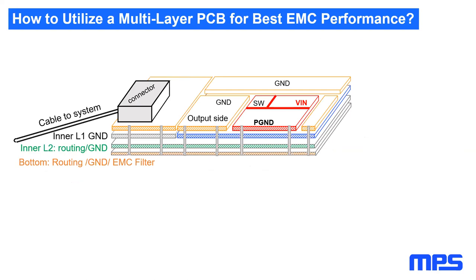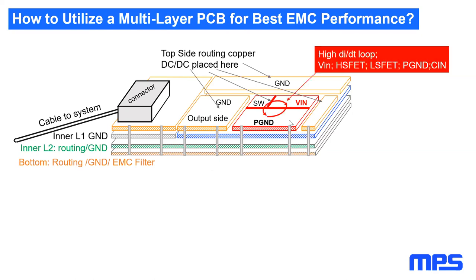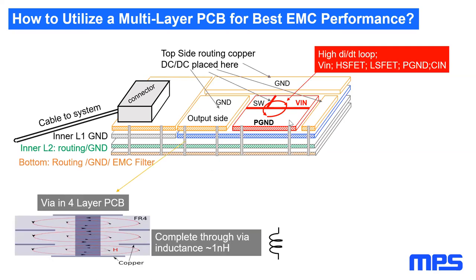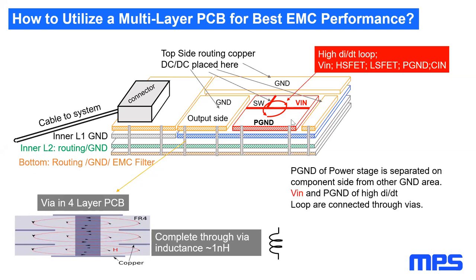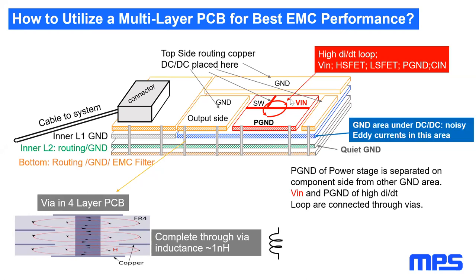How to use a multilayer PCB to our advantage: on the top side we have the VIN copper, power ground copper, and switch node copper — the switch node should be as small as possible. The inductor connects from switch to output. We connect noisy areas only through vias to inner layers — there is no direct connection from the power ground copper to the input ground copper area. Every via through this four-layer board has around 1 nH of inductance, acting as a filter. We separate the noisy power ground of the power stage from the output ground and surrounding grounds.